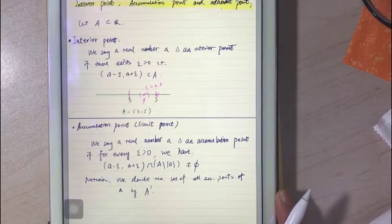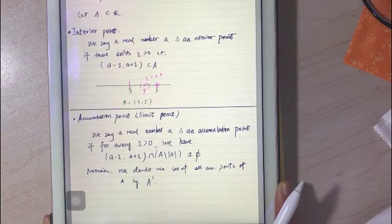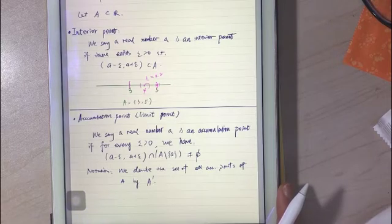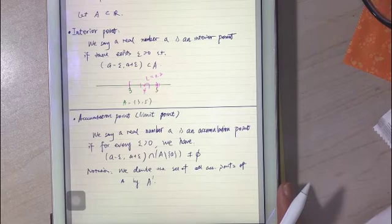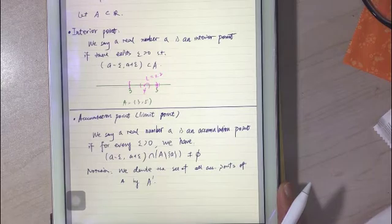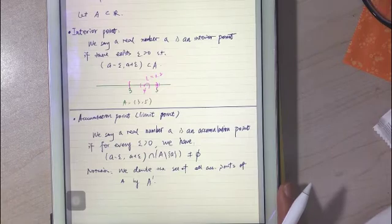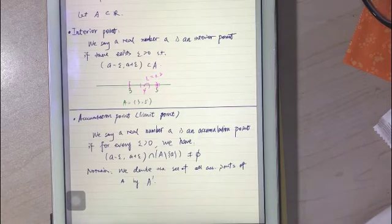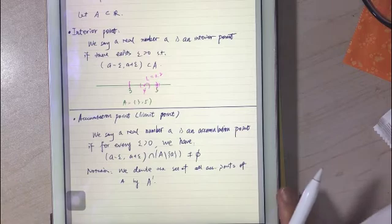Now let's move on to accumulation points. Accumulation points are also known as limit points. In the following videos we're going to talk about the limit of a sequence or limit of a function, so accumulation points or limit points are very closely related to limits. Many people call them limit points, which is reasonable. You can call it accumulation point or limit point — whatever you want, it's the same.